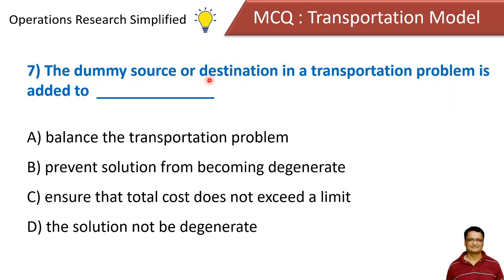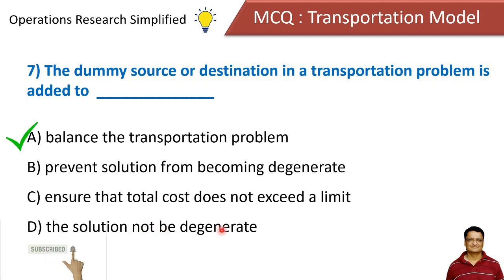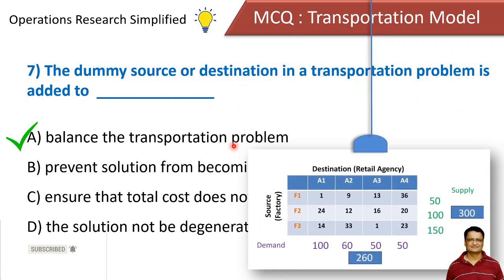A dummy source or destination in a transportation problem is added to: balance the transportation problem, prevent the solution from becoming degenerate, ensure total cost does not exceed the limit, or ensure a solution is generated. The correct answer is to balance the transportation problem. For example, if supply is greater than demand, we add a dummy column to make the problem balanced so it can be solved.